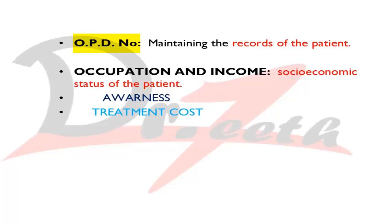Occupation and income of the patient help determine socioeconomic status and accordingly plan the treatment. This gives an idea of how much awareness the patient and their parents have about a particular malocclusion, and whether the patient will be able to bear the cost of treatment. For example, clear aligners are very costly, lingual treatment is less than clear aligners but costlier than labial orthodontics.